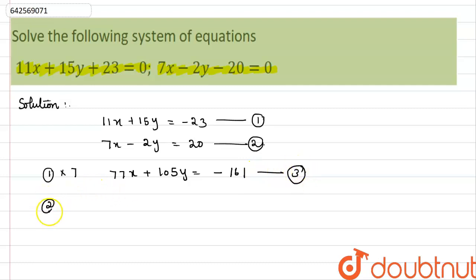And now multiply the second equation by 11. So we will get 77x minus 22y equals 220. Mark it as equation 4.